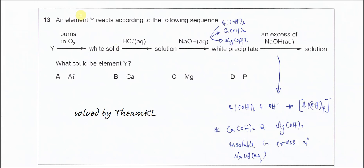Question 13. An element Y reacts according to the following sequence. First step, burn in oxygen form white solid. So all the elements after they burn in oxygen they will form white solid. Therefore this one is too general. They will all form oxides.